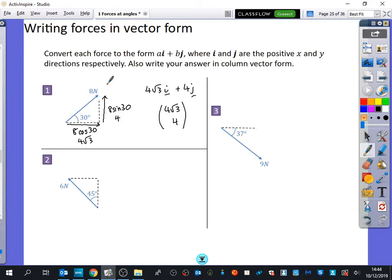Good. And so in column vector, it's just 4 root 3, 4. The fact they're both positive is telling me that they're going to the right and they're going up, because that's how we know that they work. Question 2, remember it always starts from where the arrow begins. So we've got this one, if it's going diagonally like this, what should these two things be? Up, down, left, right? What's it going to be a combination of?